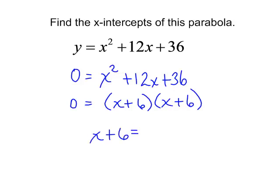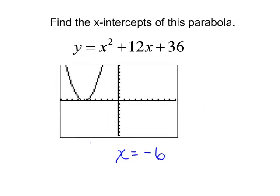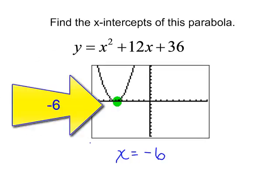X plus 6 will equal zero, which means that the x-intercept will be negative 6. Let's see how that looks when I type it into the calculator. And I do have only one x-intercept at negative 6.